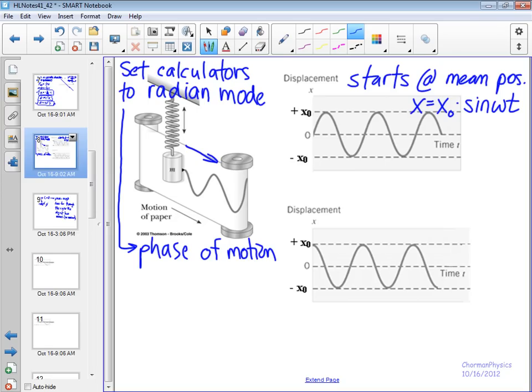So, if we don't start out at the mean position when we're plotting our displacement, and instead we start out at the amplitude, a different initial condition, so the second graph starts at the amplitude, or the maximum displacement, our function is going to follow X equals X naught times cosine omega t.